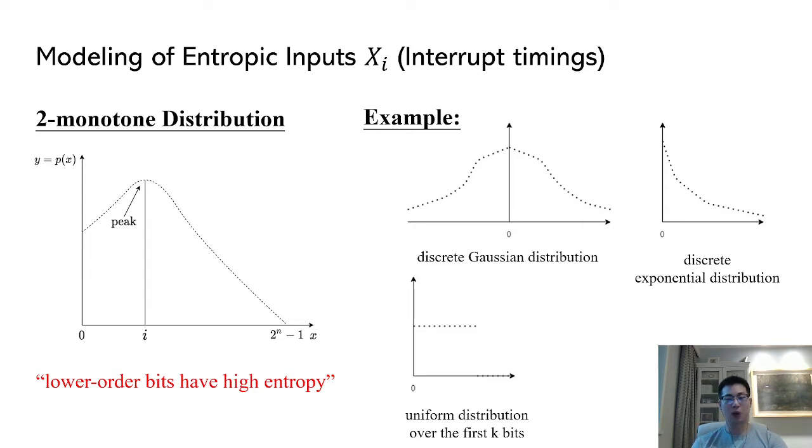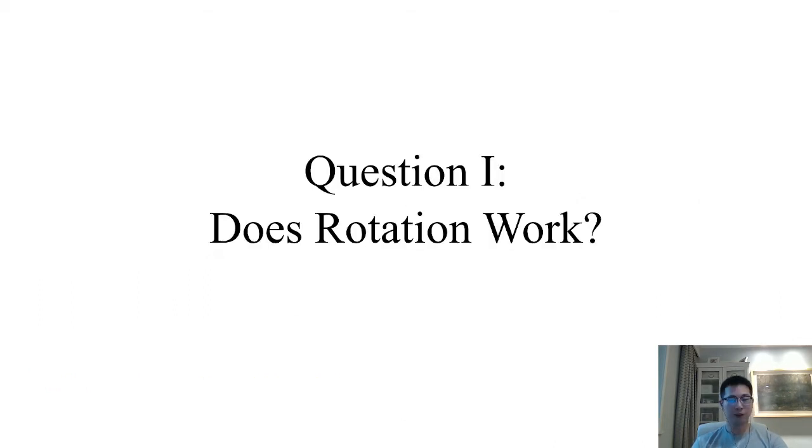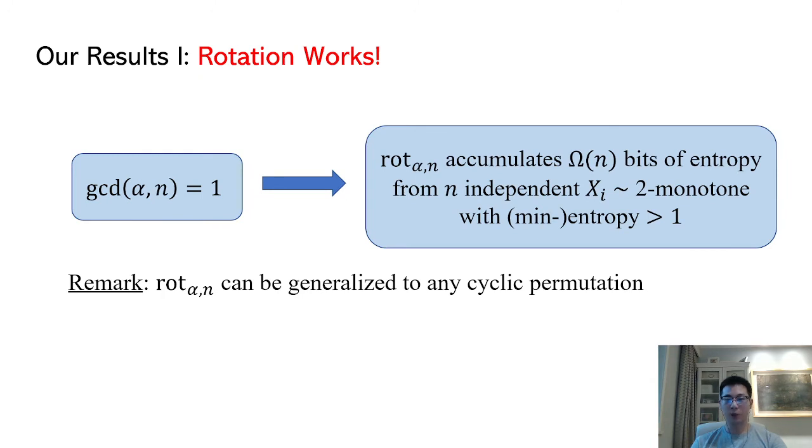With entropy sources being modeled properly, now we are prepared to present our results. First of all, since any two-monotone distribution has most of its entropy in the lower-order bits, we can use this property to show that any rotation on n bits with rotation number alpha coprime to n can accumulate nearly n bits of entropy within n steps.